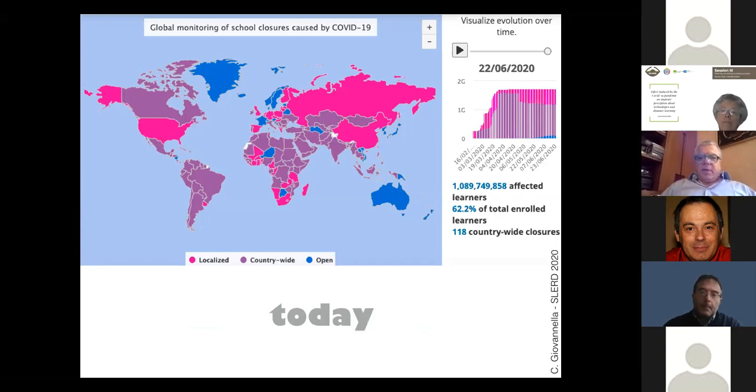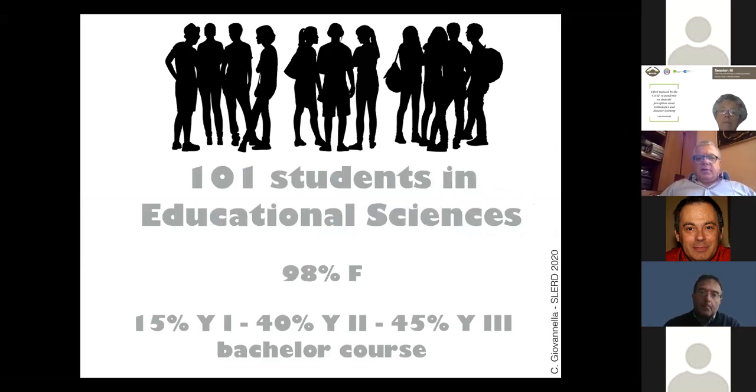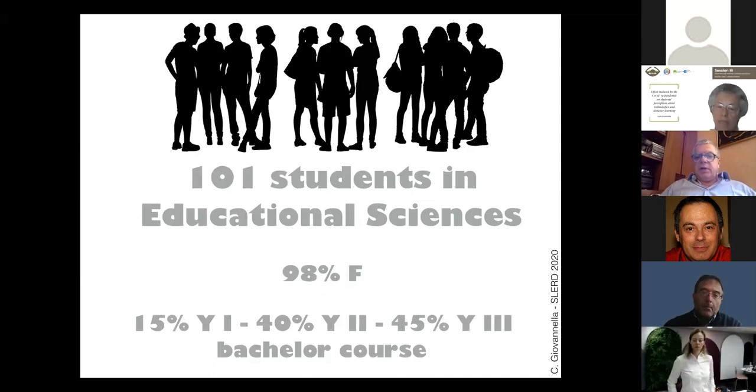Here is our study situation. We collected questionnaires that were filled by 101 students in Educational Sciences bachelor course. This set of students were chosen because they were deemed very interesting since they are expected to act as educators in their own life. 88 percent were female, and 45 percent were enrolled in the first bachelor year, 40 percent in the second year, and 15 percent in the third year.